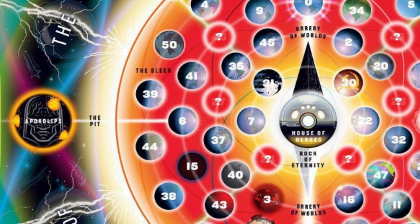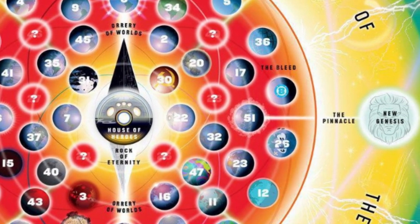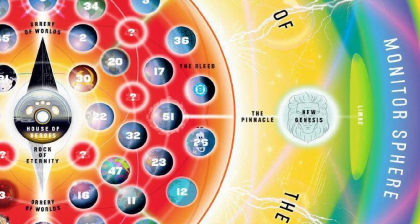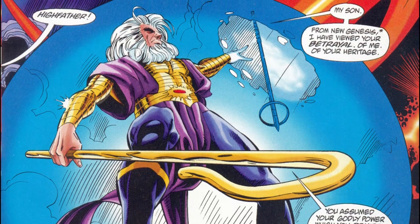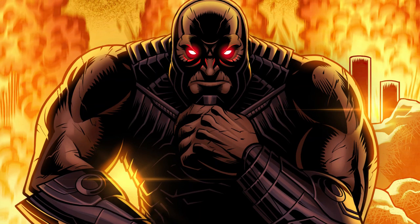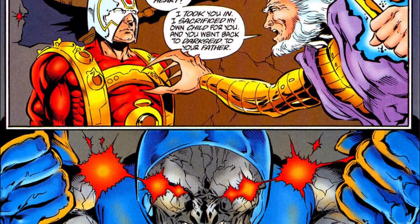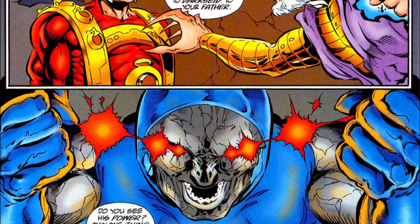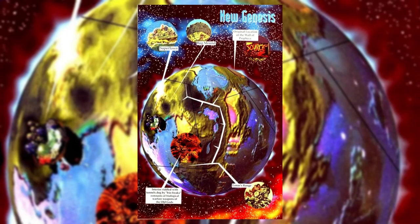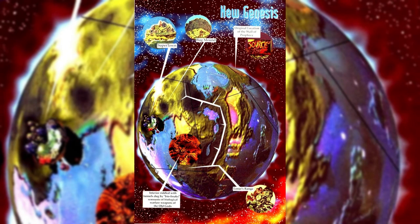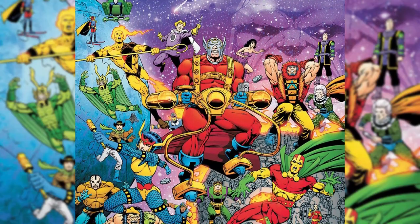Fortunately, there exists a formidable counterforce to Darkseid's malevolence. On the opposite side of the multiverse lies New Genesis, another celestial planet inhabited by the New Gods and overseen by the High Father, who happens to be Darkseid's brother. The High Father embodies the complete antithesis of Darkseid, driven by a noble purpose to bring peace and prosperity to all beings. Viewed as personifications of good and evil, Darkseid and the High Father engage in an unending struggle — their clash representing the timeless battle between light and darkness, virtue and wickedness, shaping the destiny of the multiverse.